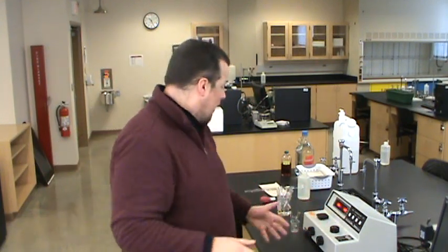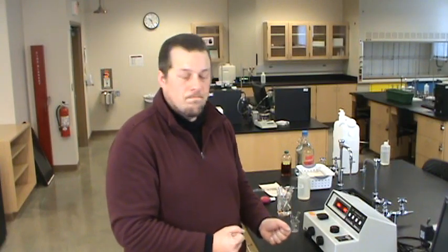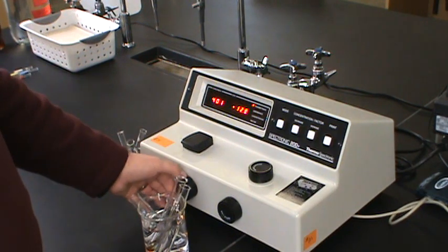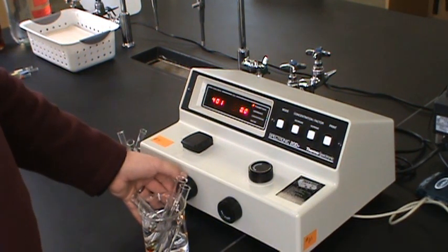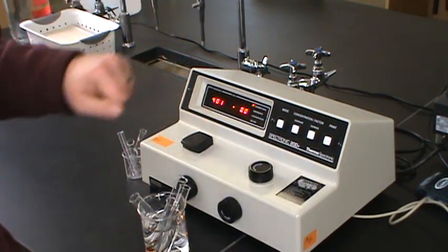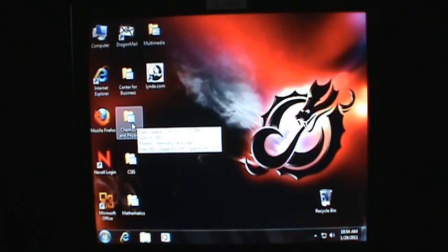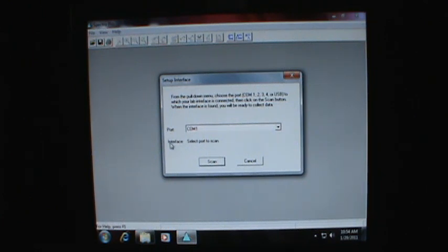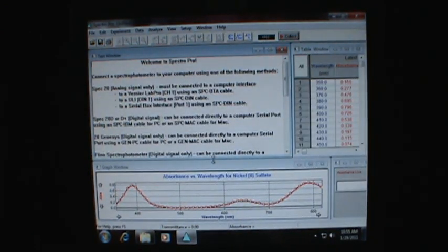So I think I'm just about ready for a run. I have my samples ready. Got my spec 20 turned on and it looks like I need to calibrate it. My zero is good. I'll do my 100% in a minute. Let's get the computer set up. On the desktop, we should be able to go to chemistry and physics. We're using a spectrometer, so SpectroPro. You may come up with this dialog box to set up interface. If you do, click scan and wait until it pops up the Thermospectronic 20D interface. That's our spectrometer. We're ready to go.